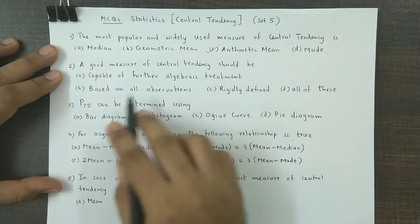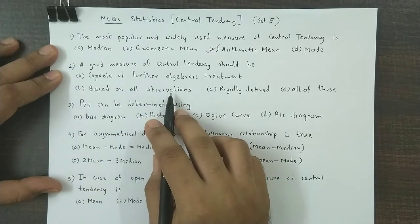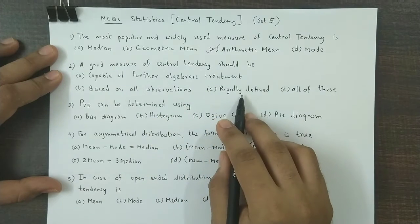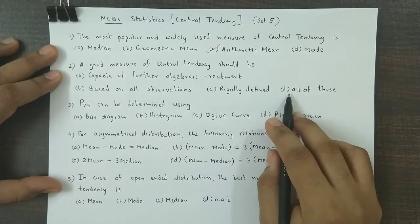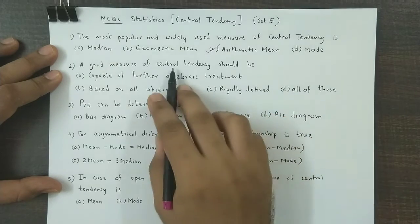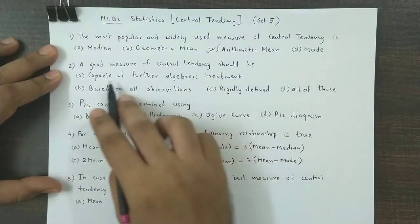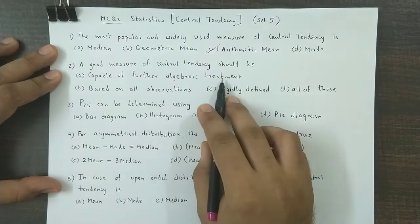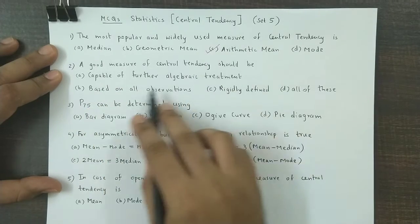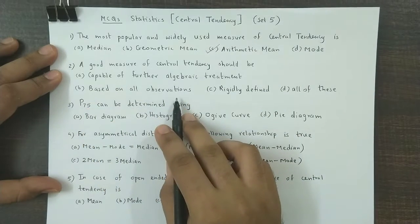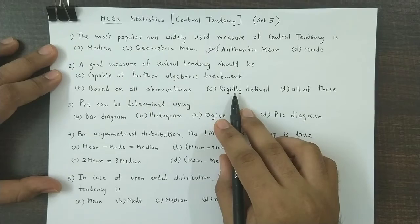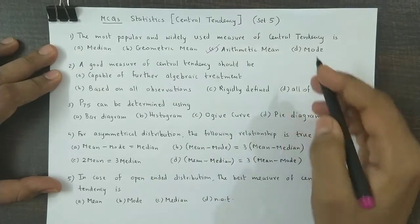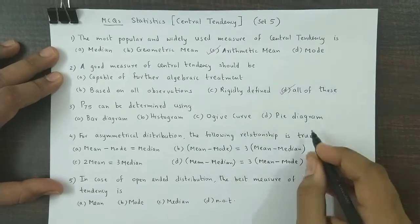Question 2: A good measure of central tendency should be capable of further algebraic treatment — yes, this condition is true. It must be based on all observations — this is also a necessary condition. It must be rigidly defined — yes, this must also be true. So the answer is all of these.